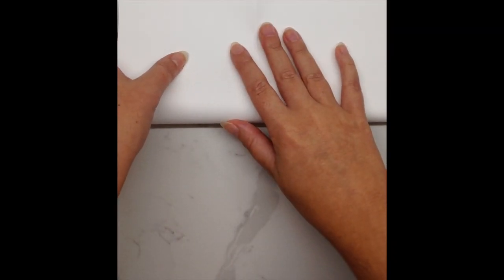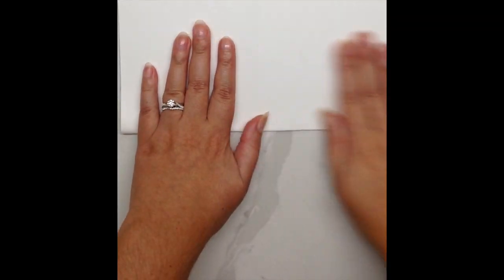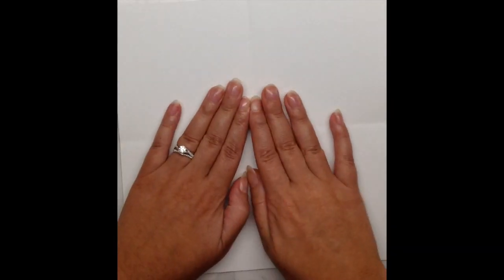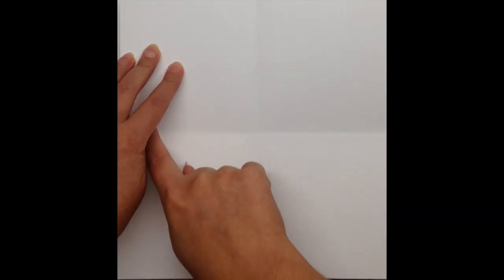Open it back up and it's time to fold it in the opposite direction. Once it's smooth, you're going to open it up and flatten it out as best you can. You should see two long lines that go across your paper.